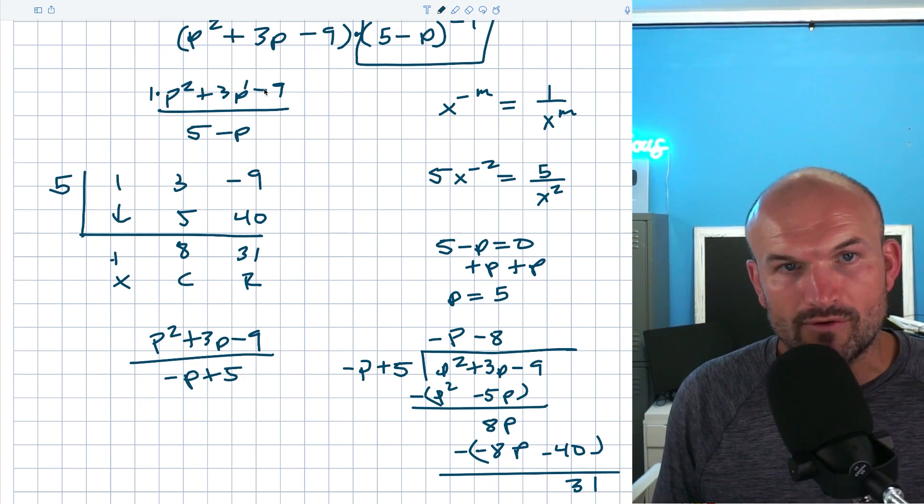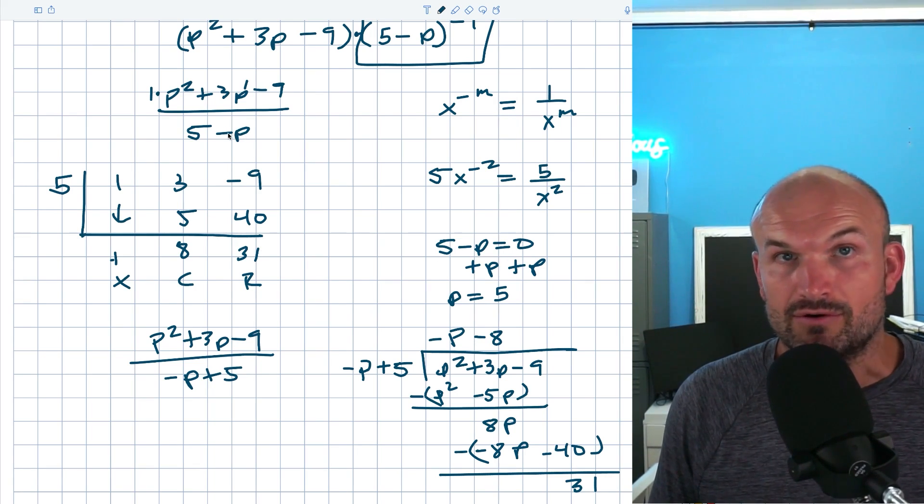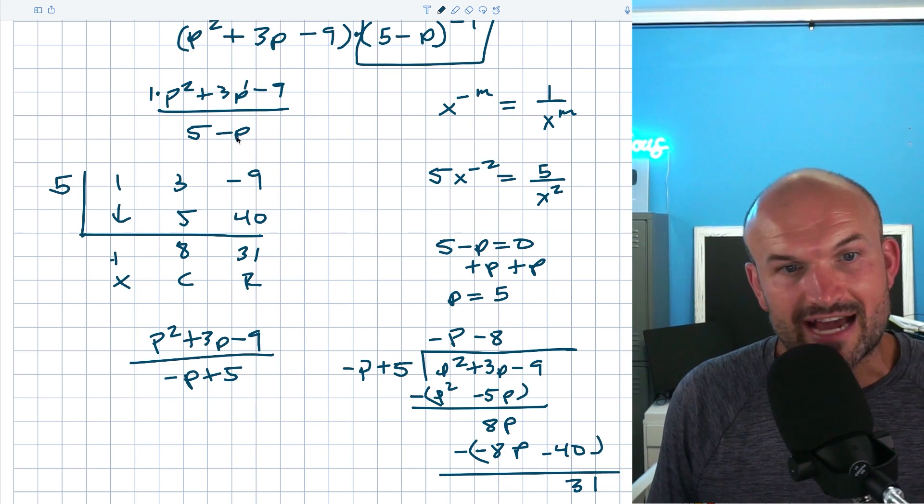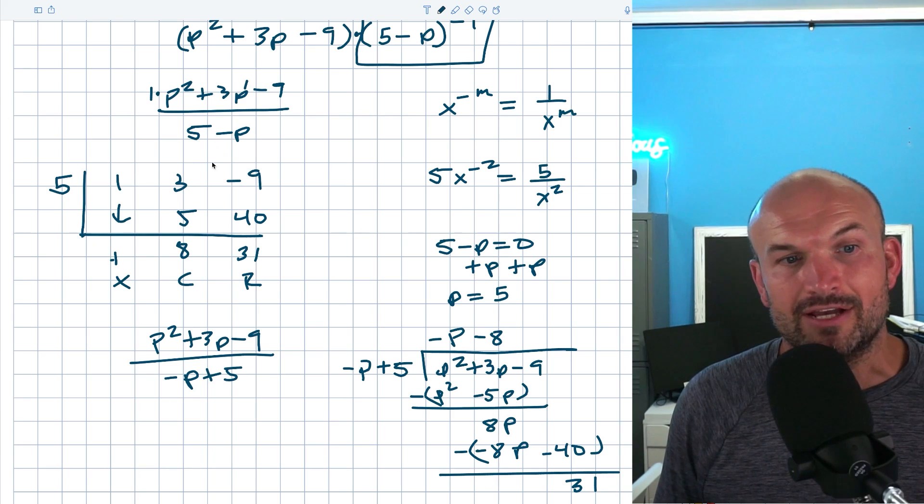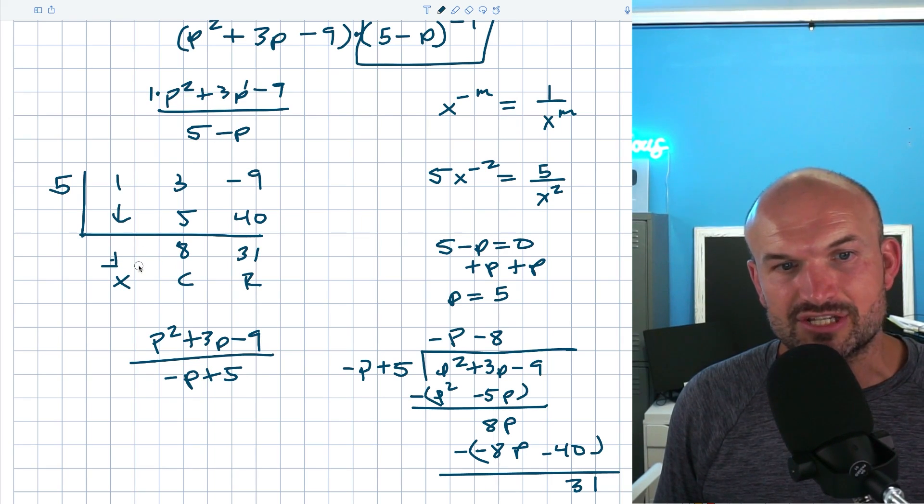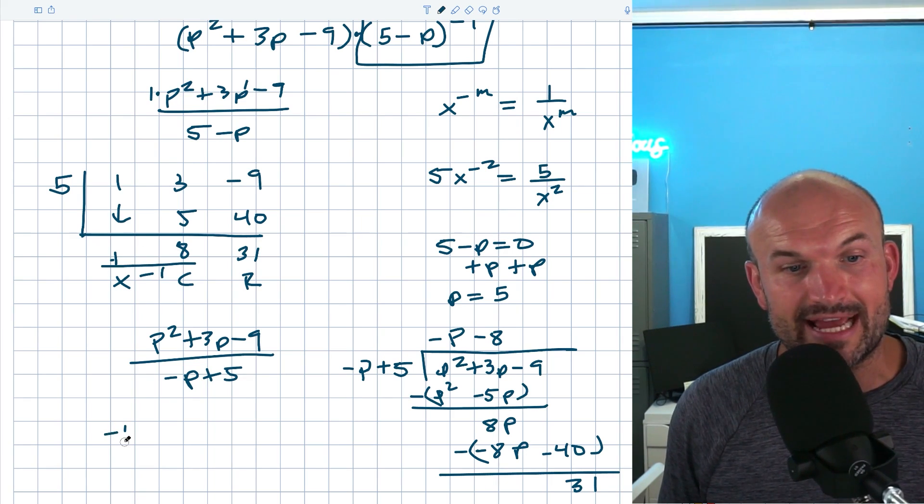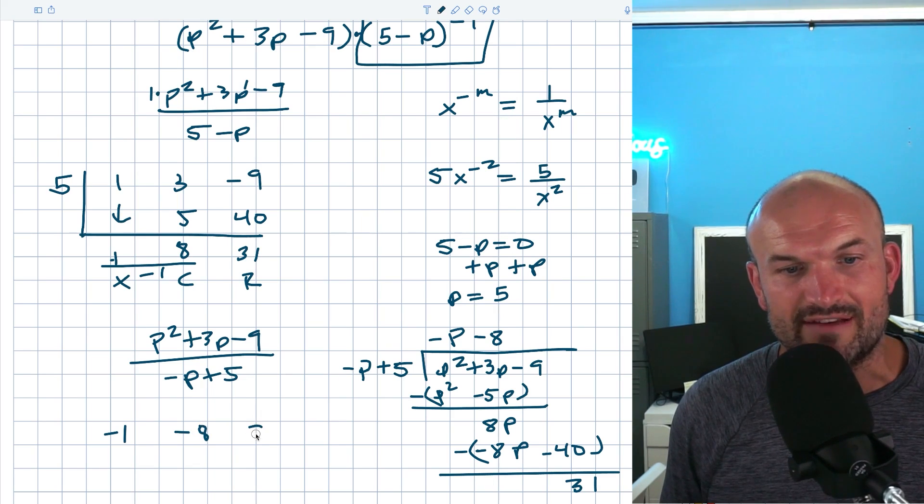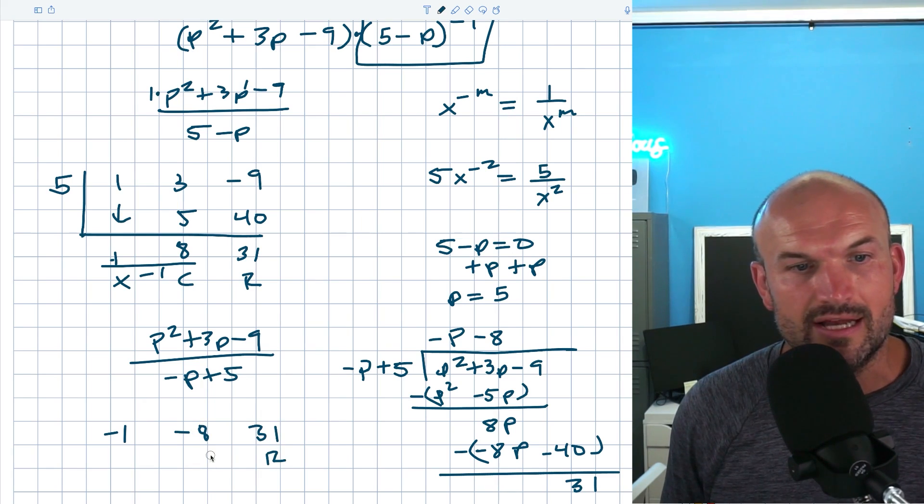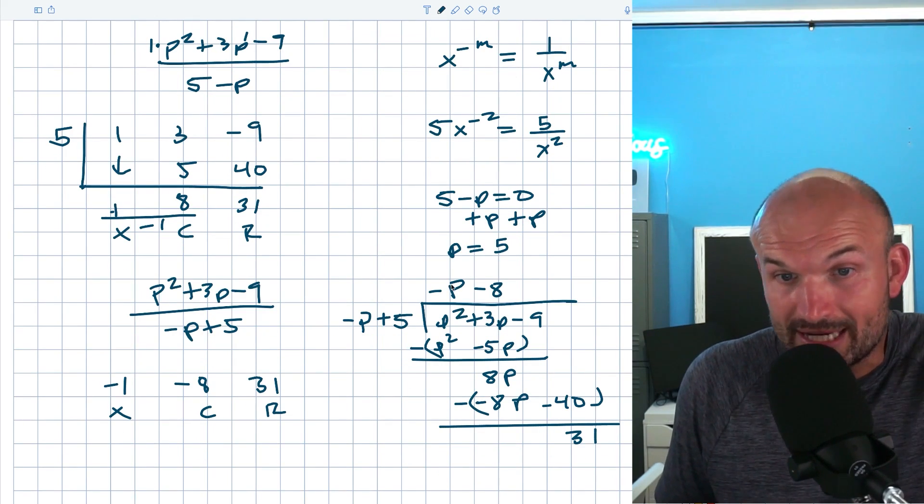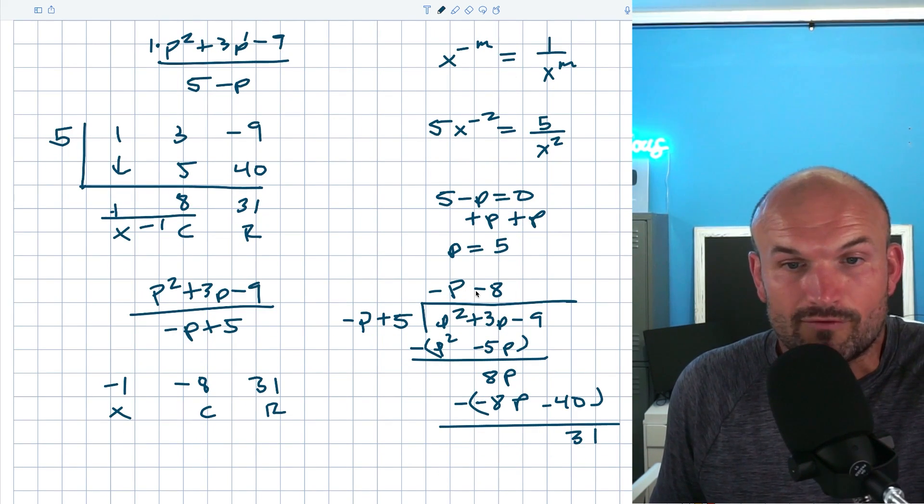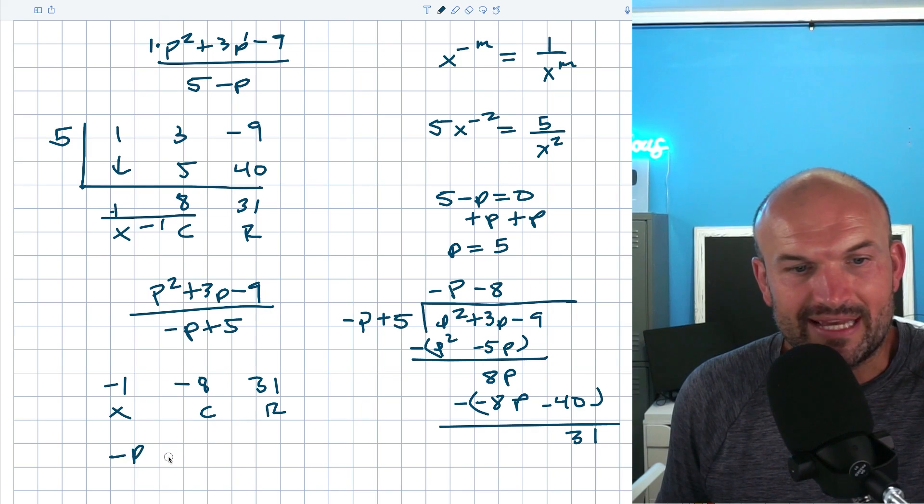So how do we transform our synthetic division to the correct answer with long division? All we simply need to do is whatever our coefficient is for our term in our divisor, right? If it's negative 1, if it's 2, if it's 5, then all you need to do is divide your quotient from synthetic division by that value. So all I simply need to do in this case is just divide everything by negative 1, which is going to give me a negative p and a negative 8. So I'll still have a positive 31. So that's my remainder, my constant, and that's my linear term. Therefore, my final answer, which we already know from our long division, is a negative p minus 8.